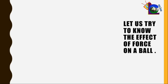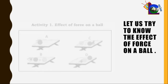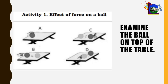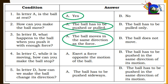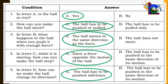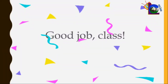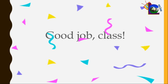For Activity 1, let us try to know the effect of force on a ball. Examine the ball on top of the table and choose the letter of your answer to the given conditions on your screen. 1 — Yes. 2 — A: the ball has to be pushed or pulled. 3 — A: the ball moves in the same direction as the force. 4 — Exert a force opposite the motion of the ball. 5 — The ball has to be pushed sideways. Your excellent performance deserves a round of applause. Good job, class!